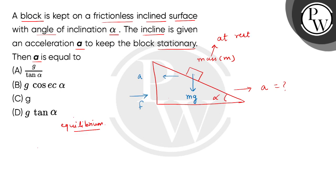The component perpendicular to the inclined plane is Mg cos alpha, and the component along the plane is Mg sin alpha.